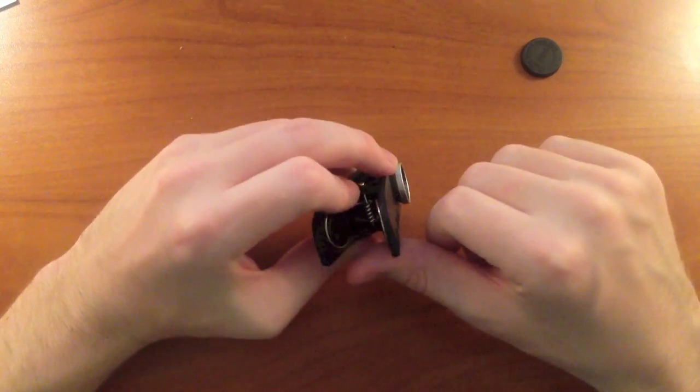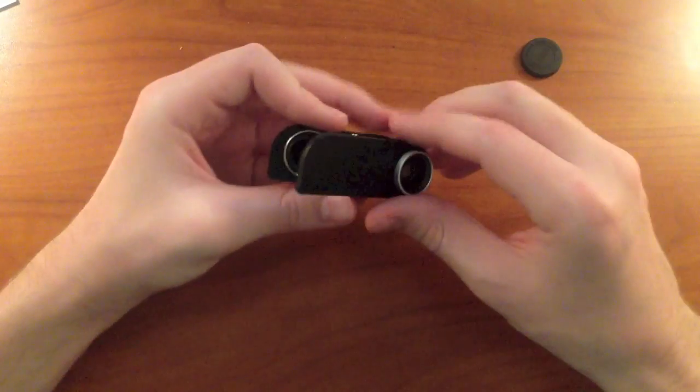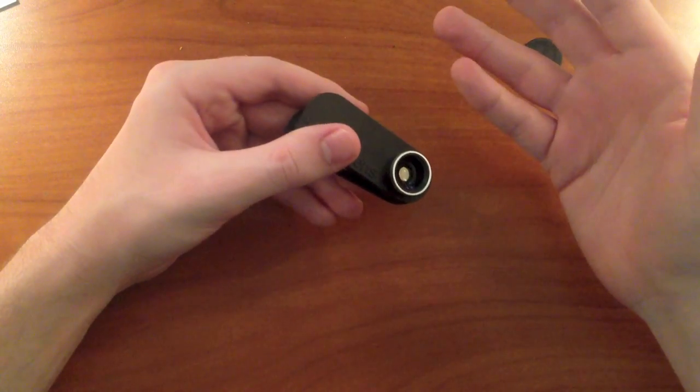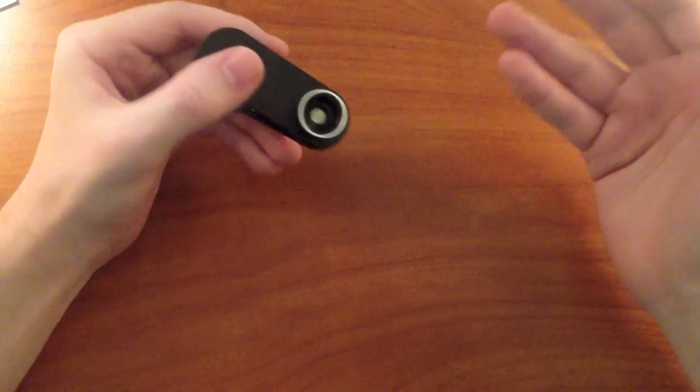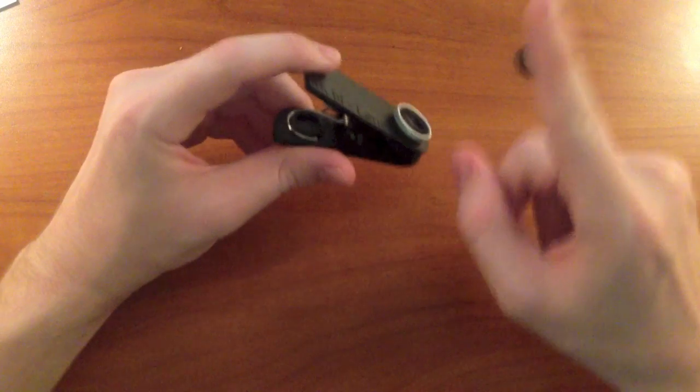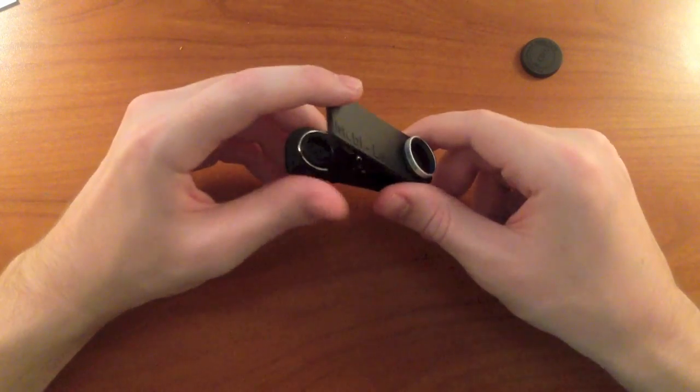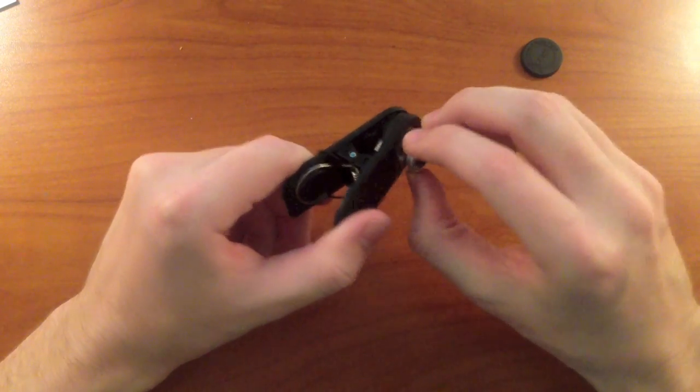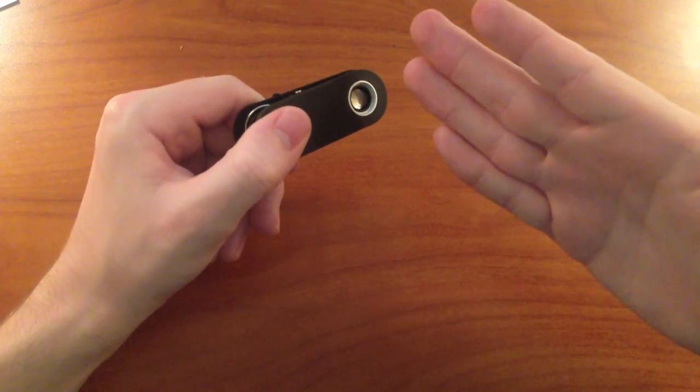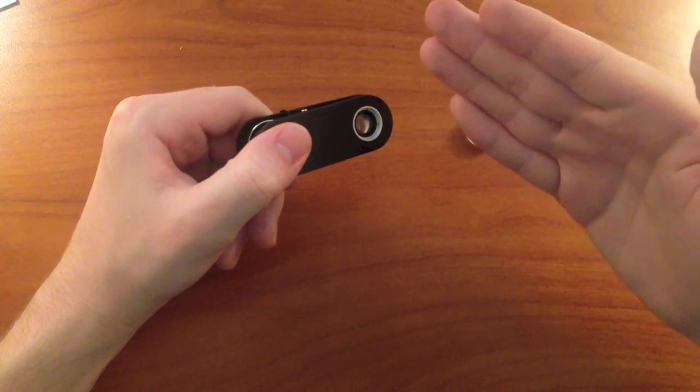But, I know a lot of you are thinking, Nick, if you've got the wide-angle lens, it's supposed to have the macro as well. How do I take macro pictures? And it's pretty simple. All you've got to do is unscrew this right here. And underneath, boom, you've got your macro lens.